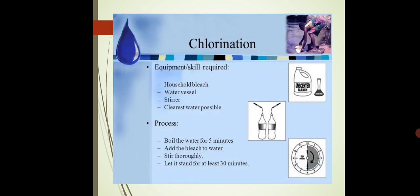The last method is chlorination. Chlorination is the method in which water is provided with a chlorine treatment. When water comes from the municipal supply it comes from the tap, and even at the household level you can give that water a chlorination treatment. So what equipment is required for chlorination?